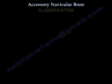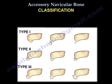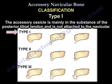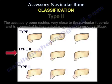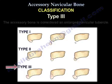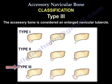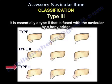The accessory navicular is classified into three types. In Type 1, the accessory ossicle is mainly in the substance of the posterior tibial tendon and is not attached to the navicular. In Type 2, the accessory bone resides very close to the navicular tubercle and is connected to the navicular by a thick layer of cartilage. In Type 3, the accessory bone is considered an enlarged navicular tubercle — essentially a Type 2 that is fused with the navicular by a bony bridge.